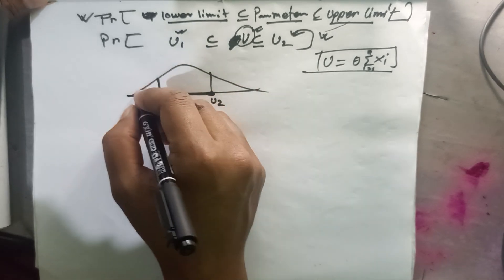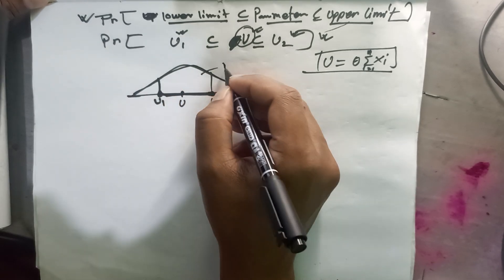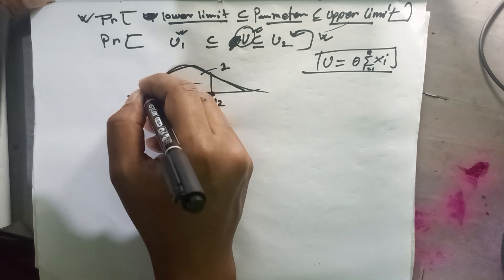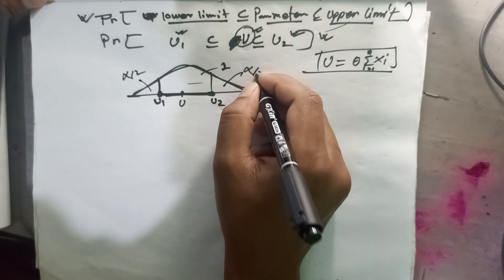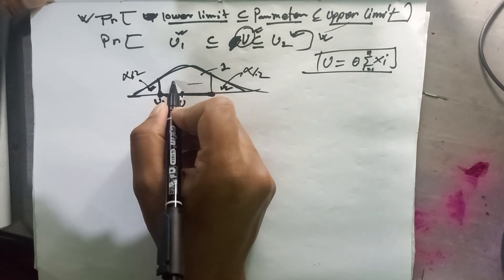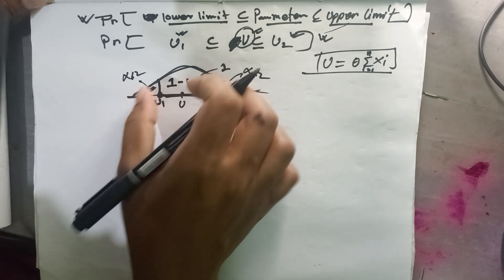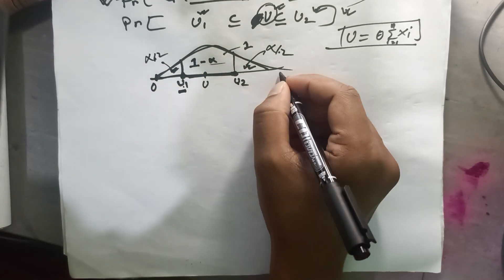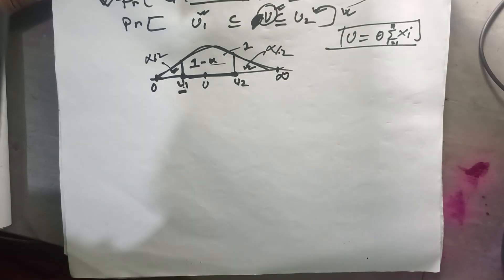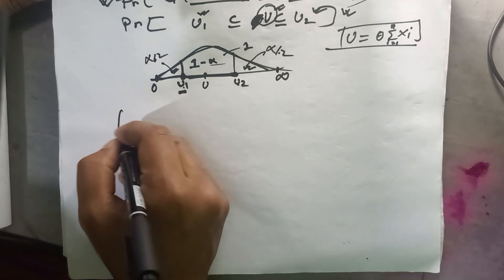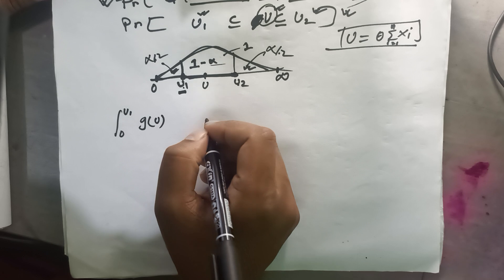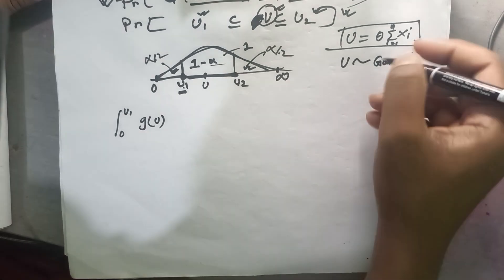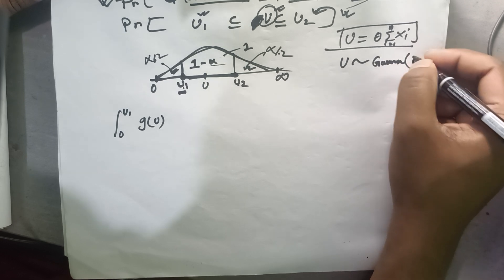The total area under the curve is one. The lower tail from zero to u1 has area alpha by two, and the upper tail from u2 to infinity also has area alpha by two. So the two tails together have area alpha, leaving one minus alpha in the middle — that is our confidence region. We will integrate from zero to u1 of g(u) du, and U follows a standard gamma distribution with parameter n.